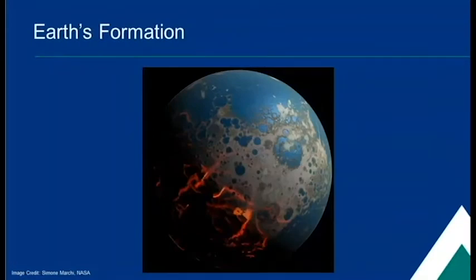When it first formed, the Earth wasn't at all like we know it today. It looked a lot different. Eventually, oceans and our atmosphere formed, but at the start, it was all rocky and barren like in this picture.